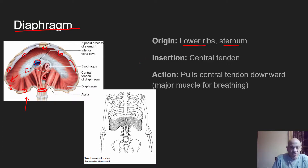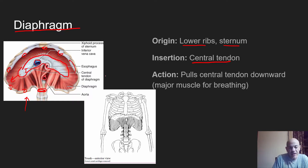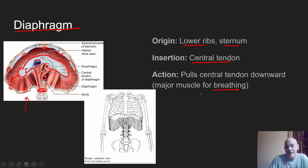The diaphragm is dome-shaped within the ventral cavity. When it contracts, it flattens out and pulls downward, expanding the volume in the thoracic cavity and pulling air in. The insertion is on the central tendon, and the action is to aid in breathing — this is the major muscle of inspiration. The external intercostals also help during relaxed breathing. The internal intercostals become involved when breathing more heavily, like during exercise, when we need to exhale faster.